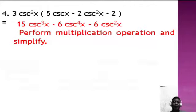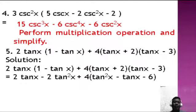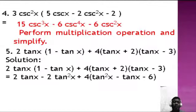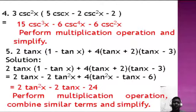Number five: 2 tangent x times the quantity 1 minus tangent x, plus 4 times the quantity tangent x plus 2, times the quantity tangent x minus 3. Performing both multiplication and addition operations gives 2 tangent x minus 2 tangent squared x plus 4 times tangent squared x minus tangent x minus 6, which simplifies to 2 tangent squared x minus 2 tangent x minus 24.